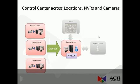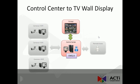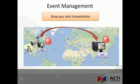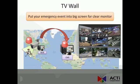The control center spans multi-locations, multiple NBRs, and multiple cameras — all pushed into the central management software. This can also be displayed on our TV wall. If there is an event at any server, whether it's a motion event or sensor event, it gets pushed to the central management software and then to the central TV wall display so multiple people can see what's going on at any event, on any server, in any location.